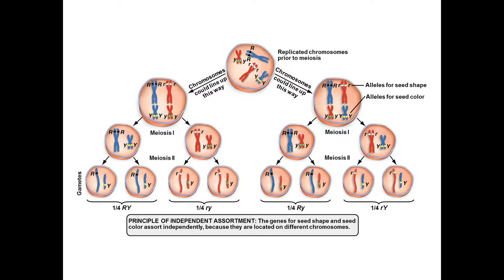Looking at independent assortment: during this process, your chromosomes will line up along the metaphase plate during meiosis I. Your homologous pairs will line up along the metaphase plate in meiosis I in one arrangement or another, depending on the different combinations you can have. For this example, we have two pairs of chromosomes — one that carries the R gene and one that carries the Y gene.